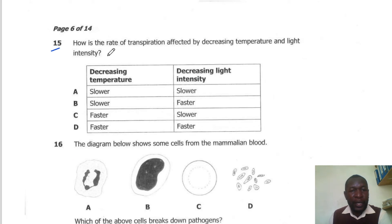Question 15. How is the rate of transpiration affected by decreasing temperature and light intensity? By decreasing temperature and light intensity, the rate of transpiration will be slower. Both will slow down. So the correct answer here is A.